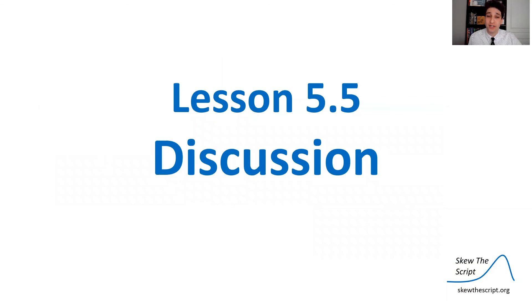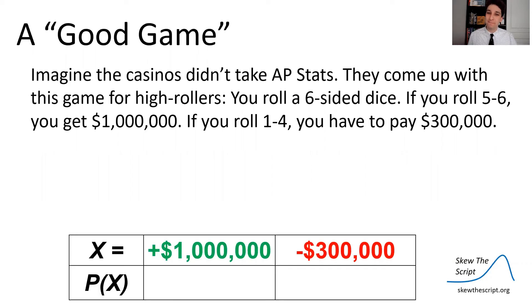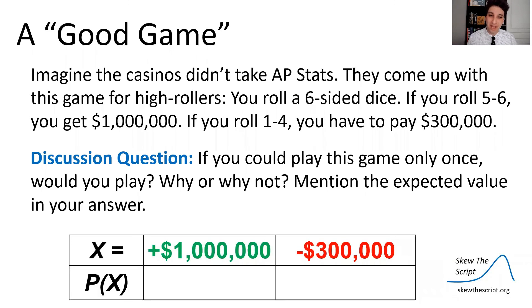For today's discussion question: Imagine casinos didn't know about expected value and came up with this game for high rollers. You roll a six-sided die one time. If it comes up 5 or 6, you get a million dollars. If you roll a 1, 2, 3, or 4, you pay $300,000 to the casino. Would you play this game if you could play it only once? Why or why not? Calculate the expected value and mention that in your answer. That's it for today, statisticians — have a good one!